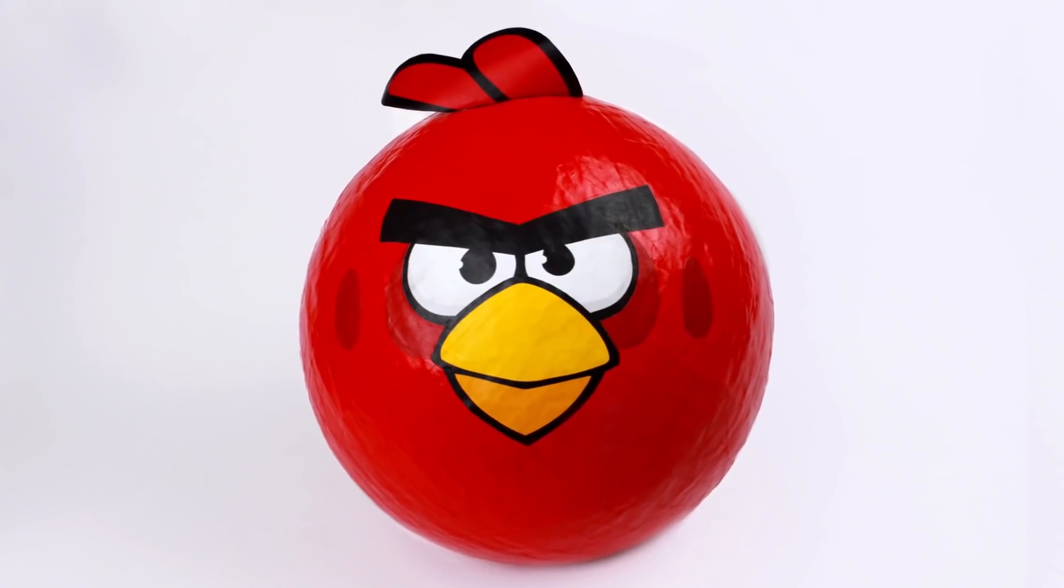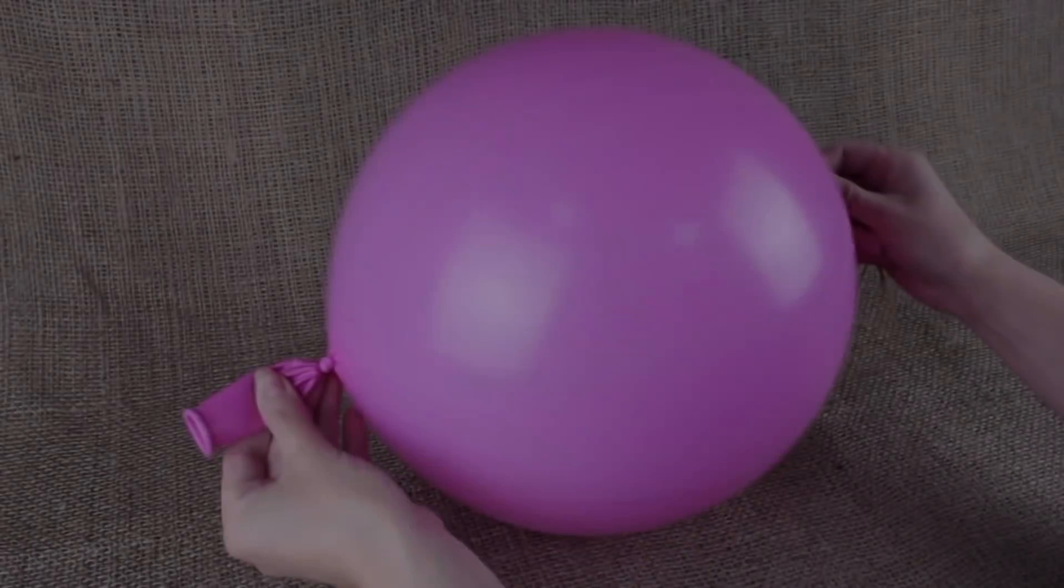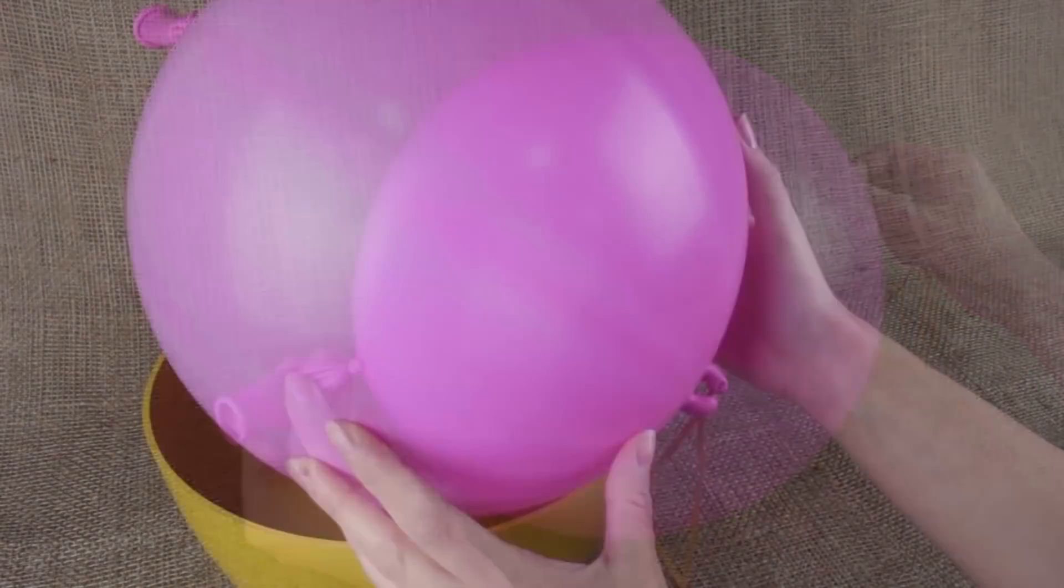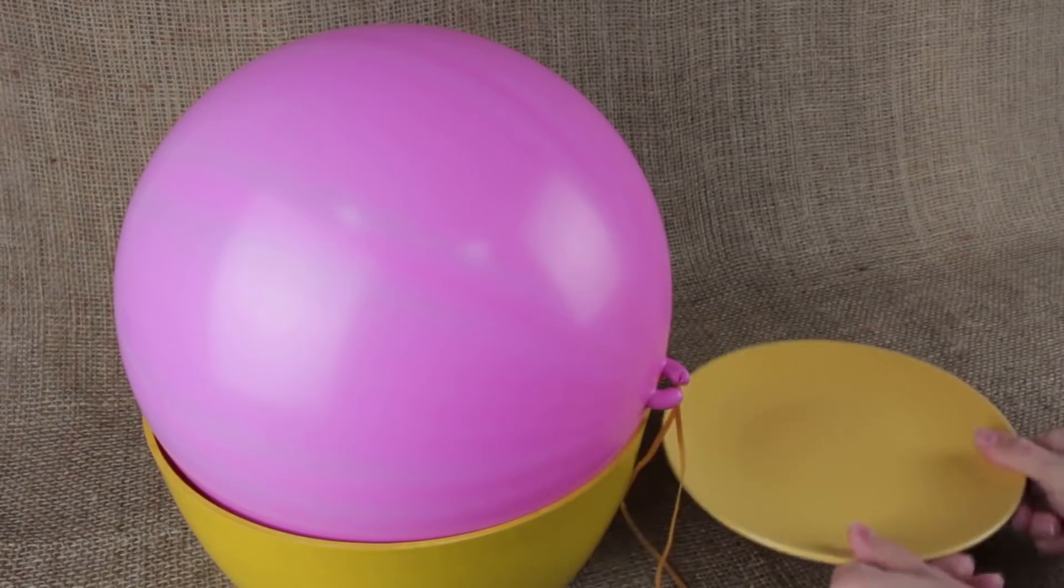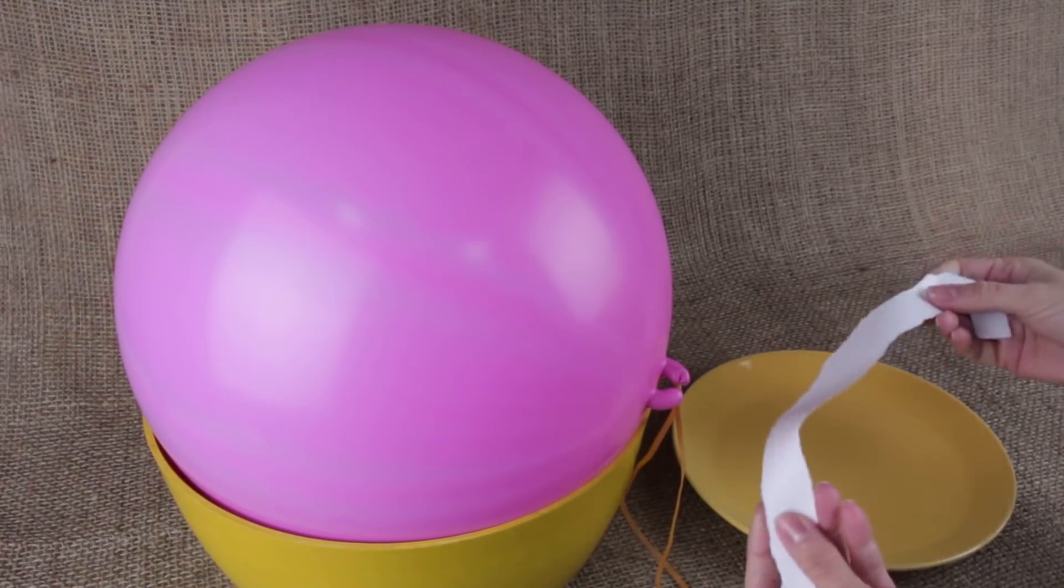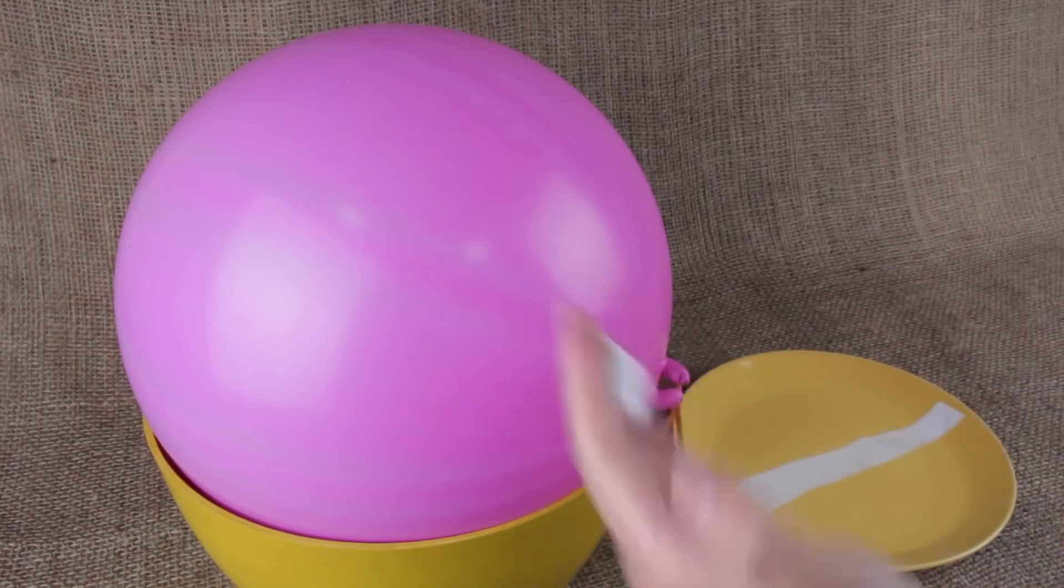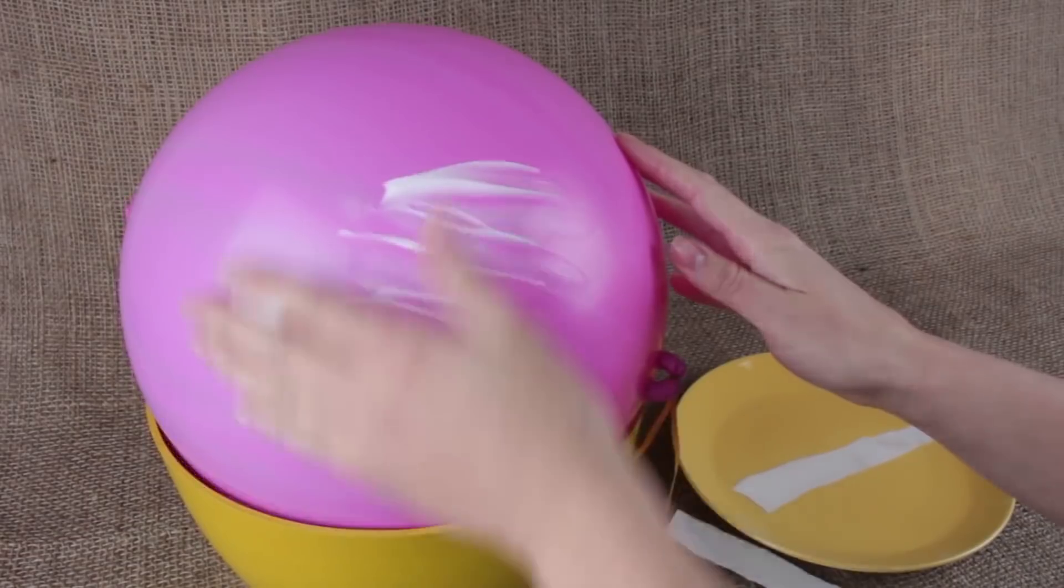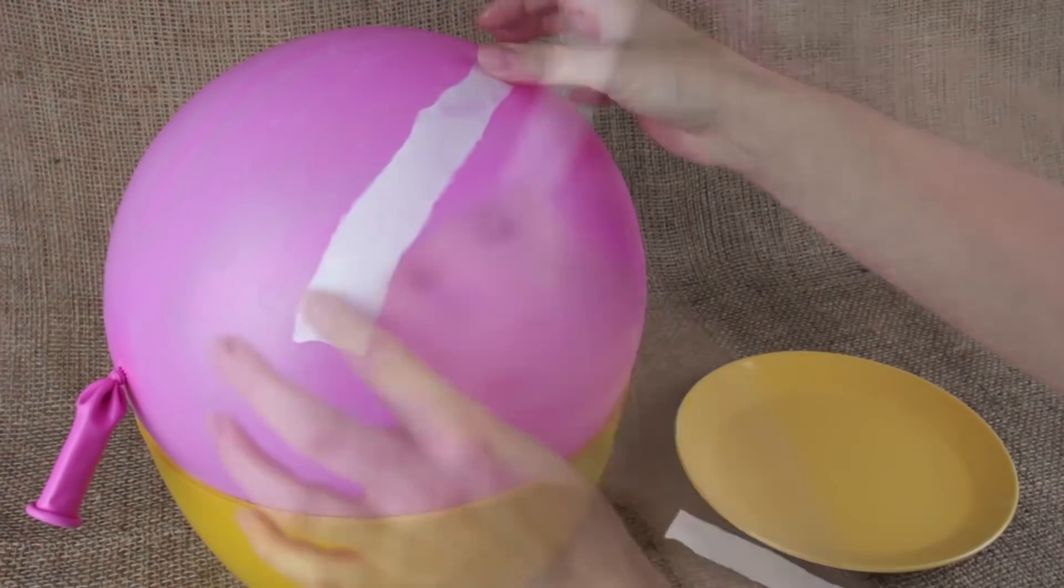In our tutorial, we'll make a bright red Angry Bird paper mache pinata. Inflate a round balloon. To make the job easier, place the balloon in the bowl to fit the size. Take a plate. Pour some water onto the plate. Tear the paper into strips. Soak it in the water. Smear a fatty cream over the surface. Attach the paper strips to the balloon, one by one overlapped.